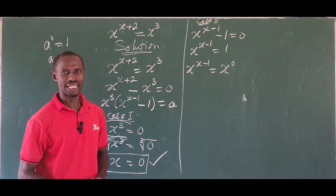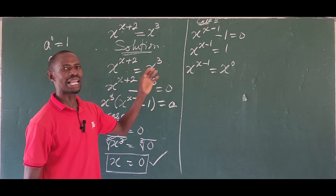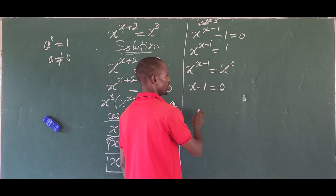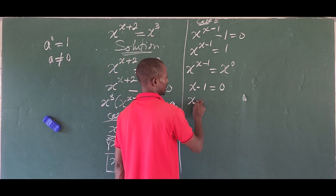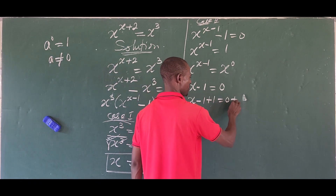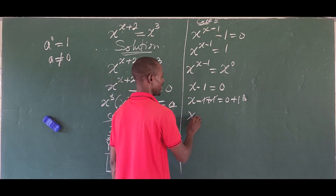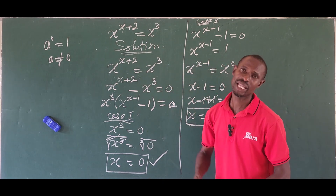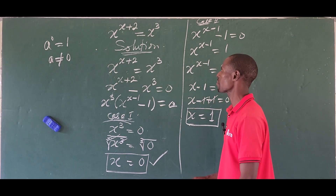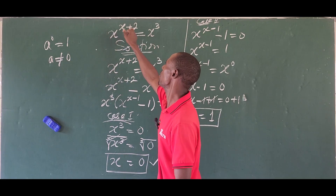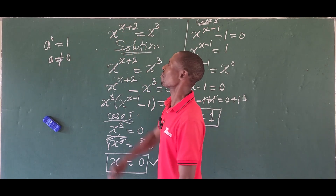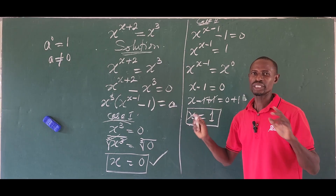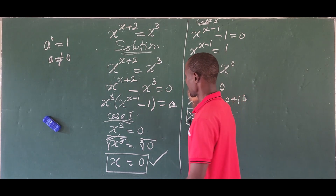Since the bases are the same and we have an equality, we can equate the exponents: x minus 1 equals 0. Adding 1 to both sides gives x equals 1. Checking: substituting 1 into the original equation, 1 to the power of 1 plus 2 equals 1 to the power of 3, which gives 1 equals 1. So x equals 1 is a valid solution.